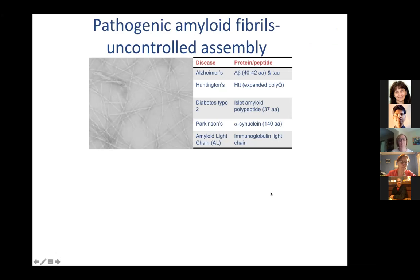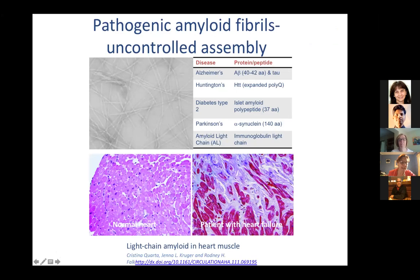Pathogenic amyloid fibrils are what I think of as uncontrolled assembly. Going back to amyloidosis as a disease — as Sheena explained, that was where I started my career, looking at transthyretin amyloid. In these two slides, on the left we have normal heart tissue, and on the right a patient with heart failure due to deposition of light chain amyloid in the heart muscle. Although in Alzheimer's disease there are many discussions about oligomeric species, what we can see here is how important amyloid fibrils themselves are in terms of disruption of tissue.